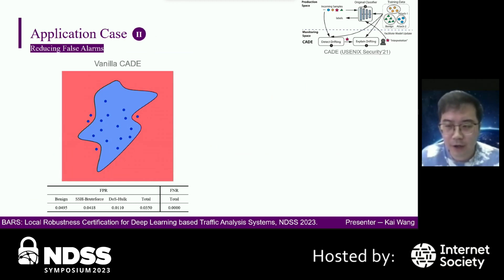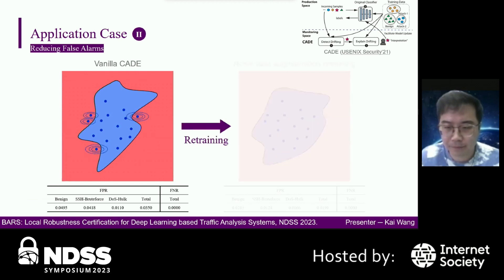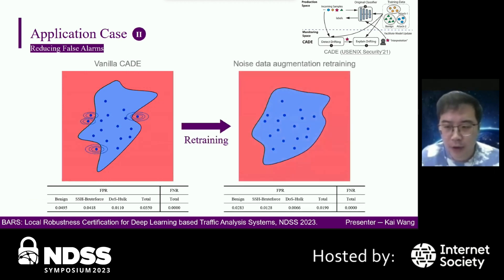The second application of BARS is reducing false alarms. In the concept drift detection system KID, the model may not be able to learn all patterns of known classes, which causes false alarms. Therefore, we can retrain KID with noise data augmentation, where the noise is optimized by BARS. As shown in the right table, we can reduce the false positive rate while keeping the false negative rate from increasing.